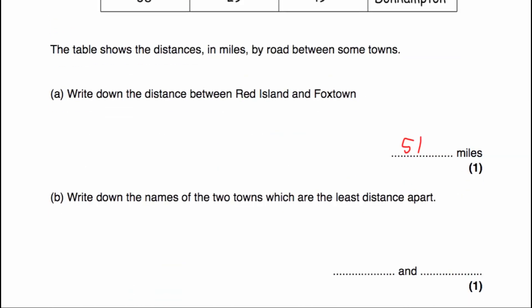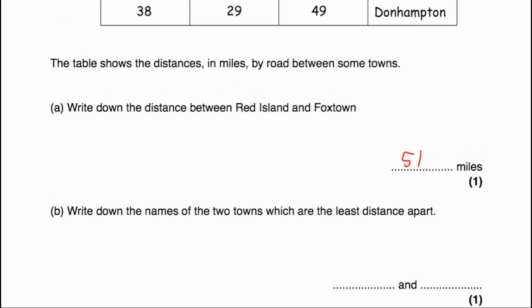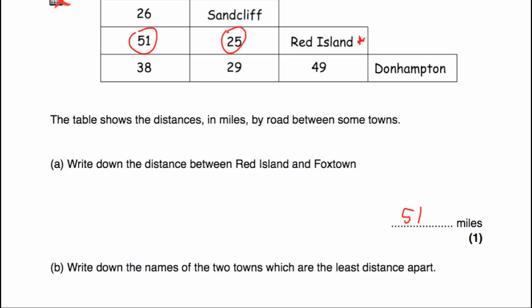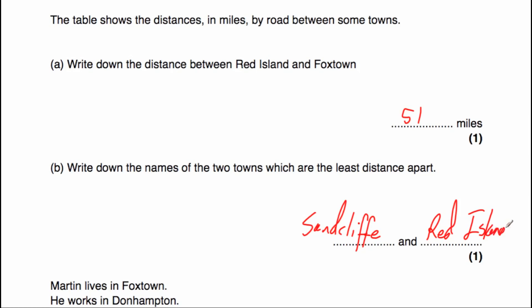Question 2B says write down the names of the towns which are the least distance apart. Let's look at our table and look for the smallest distance. We've got 26, 51, 38, 25, 29, 49 — so it's going to be 25 miles. That's between Sandcliffe and Red Island.